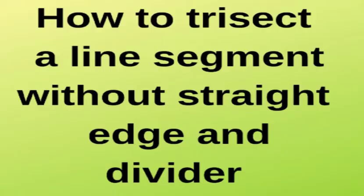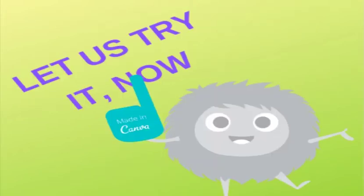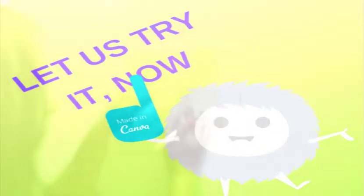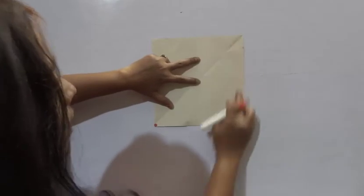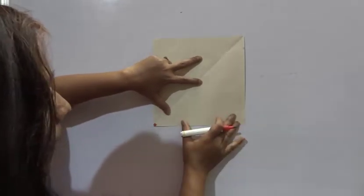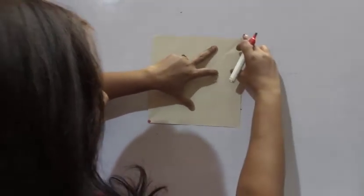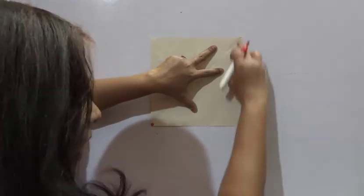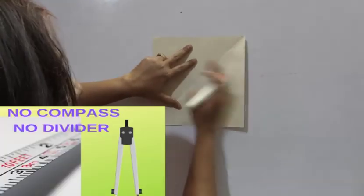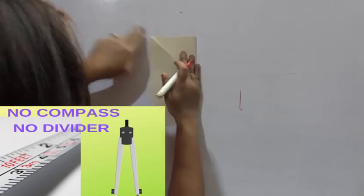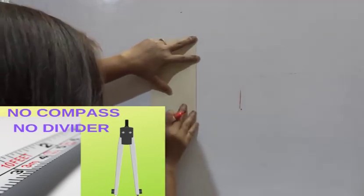Do you know how to trisect a line segment? I will show here. I have taken a square paper here and I am going to trisect this side of the square. To do this, first let me fold the piece of paper into two parts.